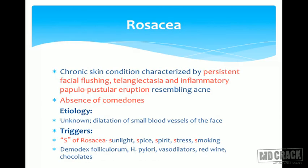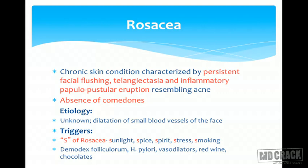Rosacea is a chronic skin condition characterized by persistent facial flushing, telangiectasias and inflammatory papulopustular eruption resembling acne. Differentiated from acne by: rosacea always has absence of comedones and persistent flushing, whereas acne has comedones without redness or flushing. The etiology remains unknown, but all patients have dilatation of small blood vessels of the face. Triggers are remembered as the S's of rosacea: sunlight, spice, spirit, stress and smoking. Additionally, infection with Demodex folliculorum, H. pylori, vasodilators, red wine and chocolates are also known triggers.